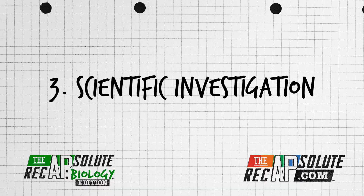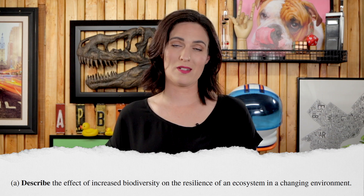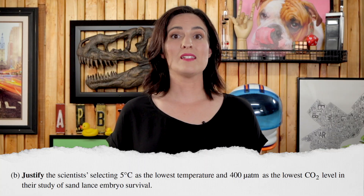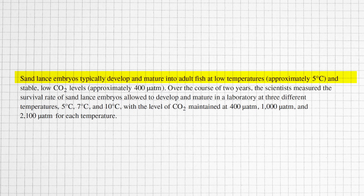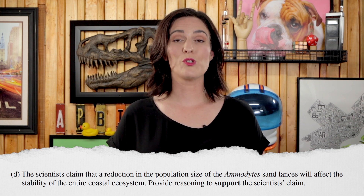Questions three through six are the short FRQs and worth four points each. Question three is scientific investigation and was about fish embryos of a keystone species that developed at different temperatures and CO2 levels. You can answer part A without the prompt: increased biodiversity increases ecosystem resilience in a changing environment because there are more community interactions and occupied niches. For part B, the scientists selected these temperatures and CO2 levels as a minimum because they represent the optimal developmental conditions and serve as a positive control. In C, there are two possible null hypotheses: either increase in temperature or increase in CO2 levels has no effect on sand lance survival rate — you only need to state one to earn the point. And part D: disruption of a keystone species will have a large impact on all trophic levels due to predator-prey interactions.